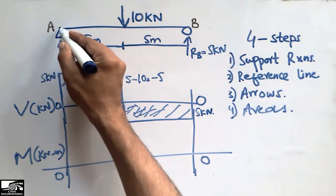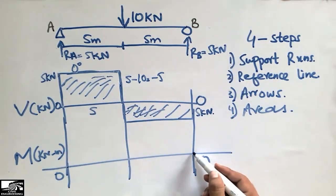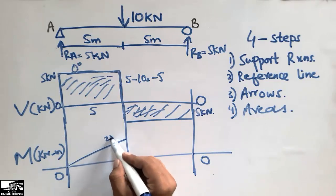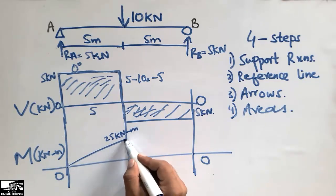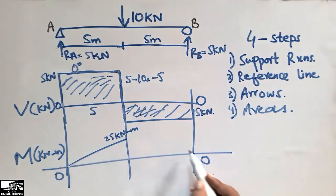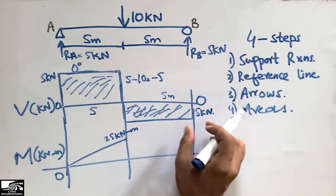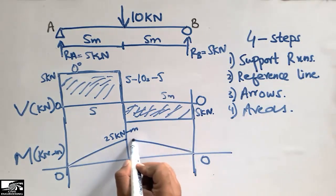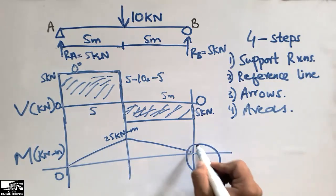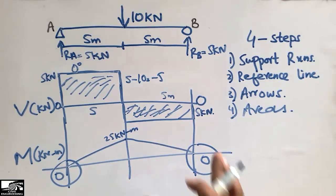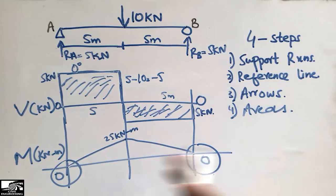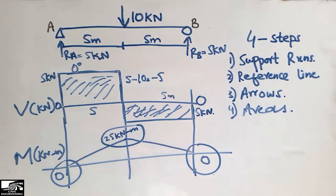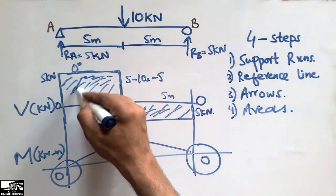At support A the moment is 0 because a hinge support resists no moment, and at support B the moment is also 0 because a roller support resists no moment. So from 0 the diagram rises linearly up to 25 kilonewton·meter at the center of the beam. From the center back to B, the area is also 5 × 5 = 25 kilonewton·meter, and the diagram returns to 0. The maximum moment is 25 kilonewton·meter at the center.